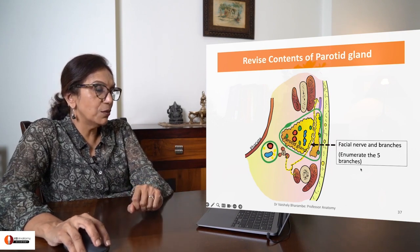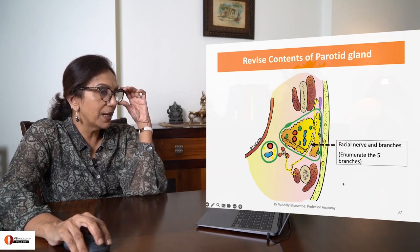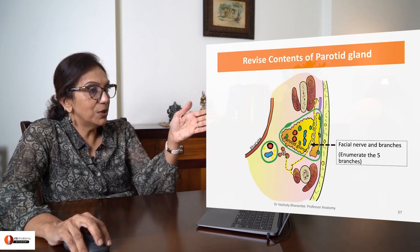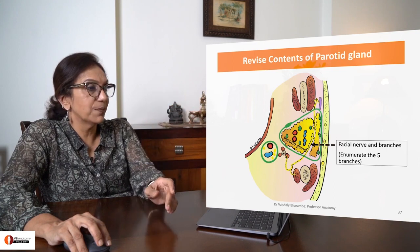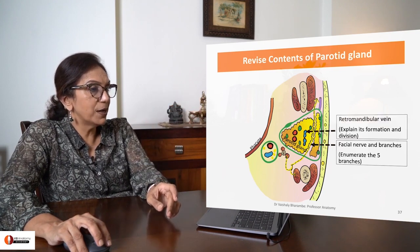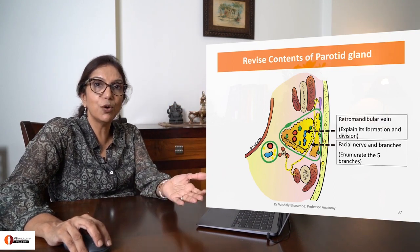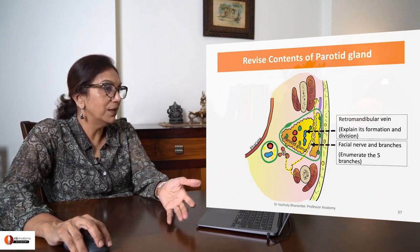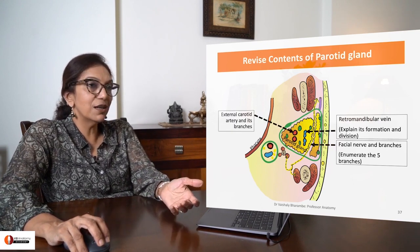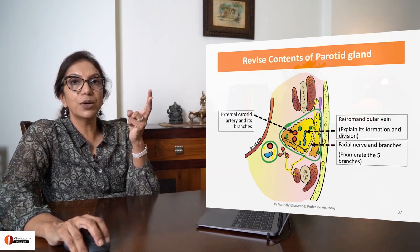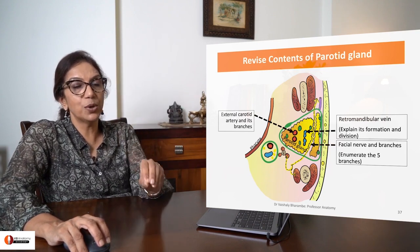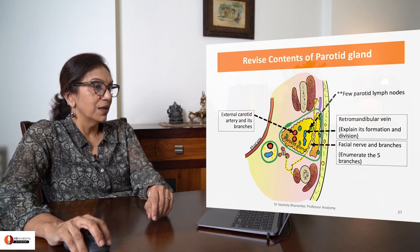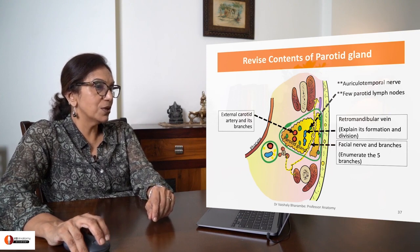Here you saw the facial nerve passing forward through the parotid gland to finally emerge at the anterior border and divide into five branches. Here you are seeing the retromandibular vein — you can explain the formation and division of the retromandibular. Here you are seeing the external carotid, which has divided into its terminal branches: superficial temporal and maxillary. You may also find a few parotid lymph nodes and the auriculotemporal nerve.